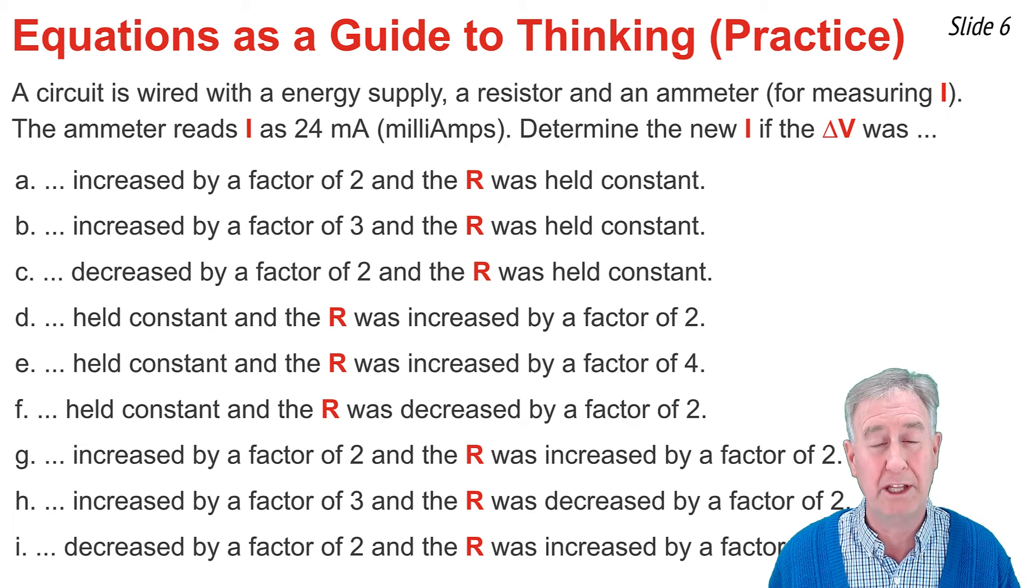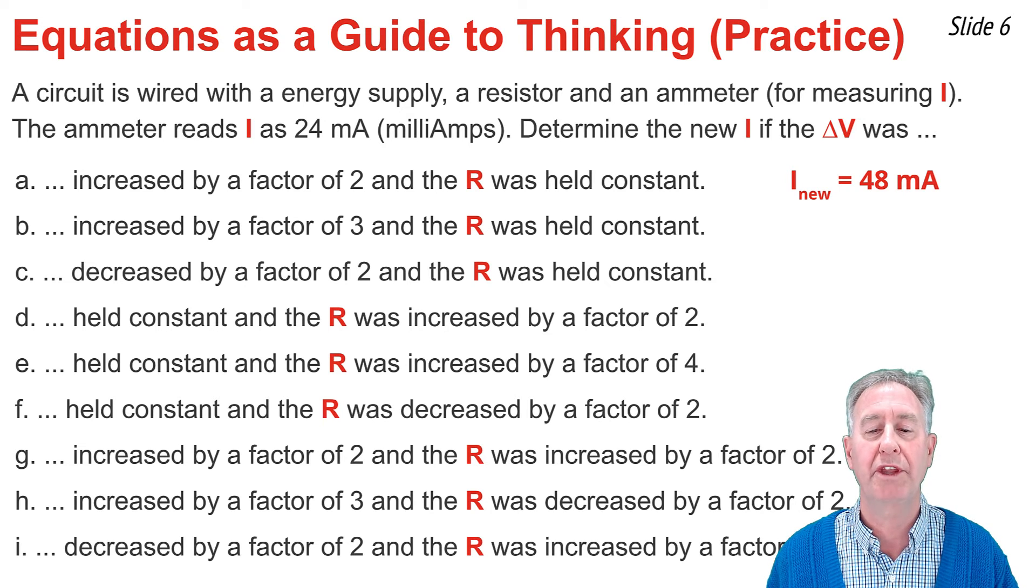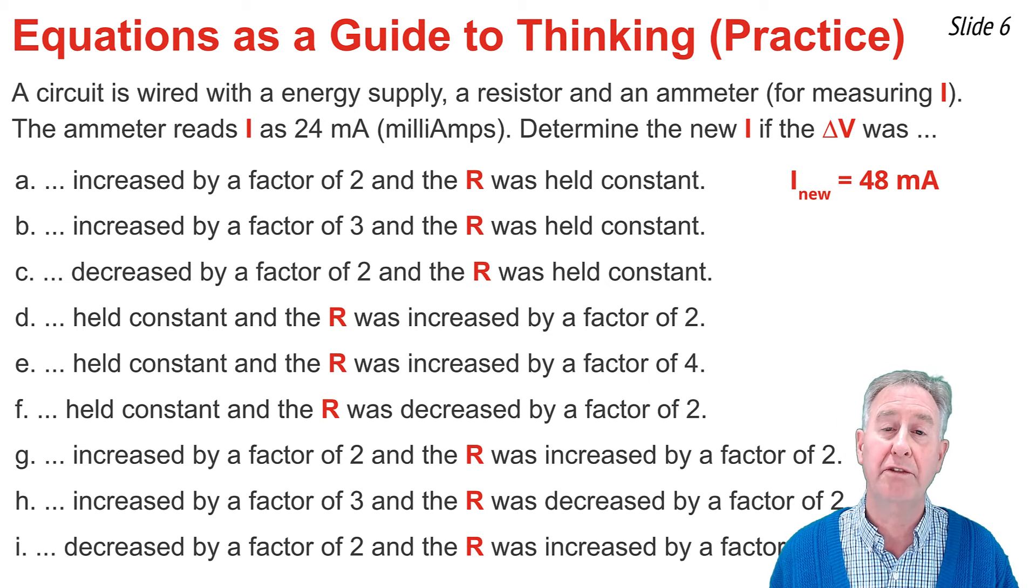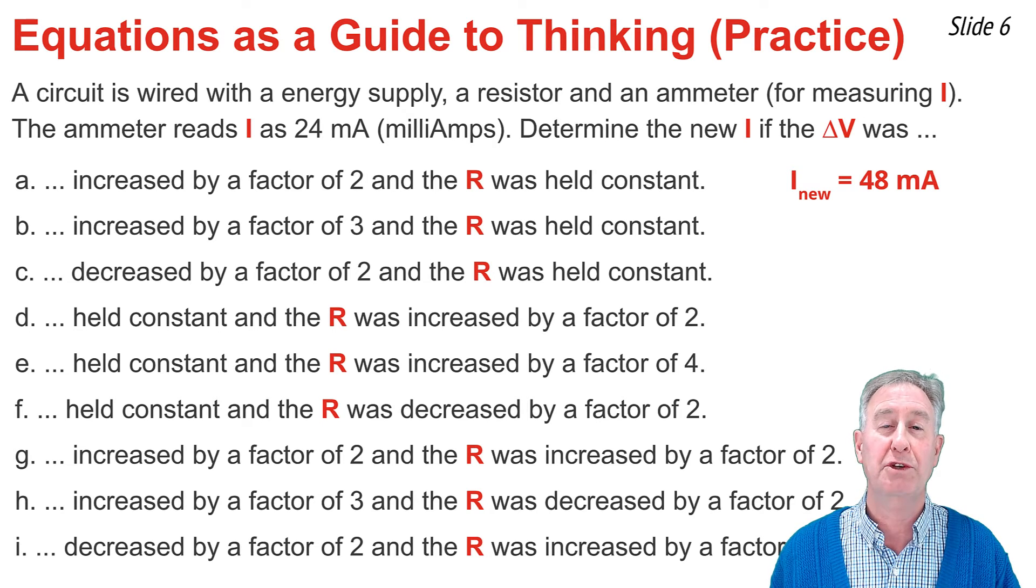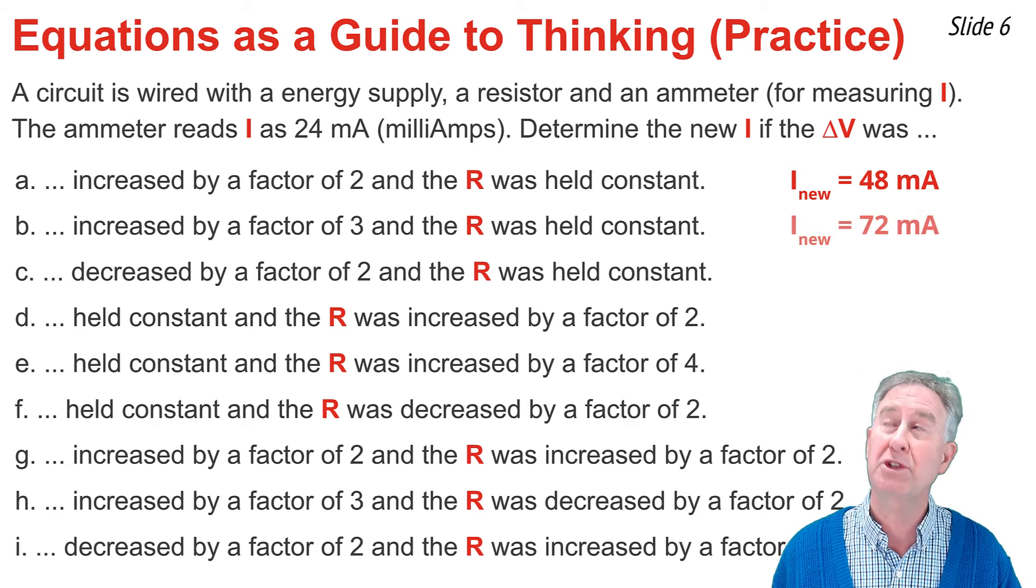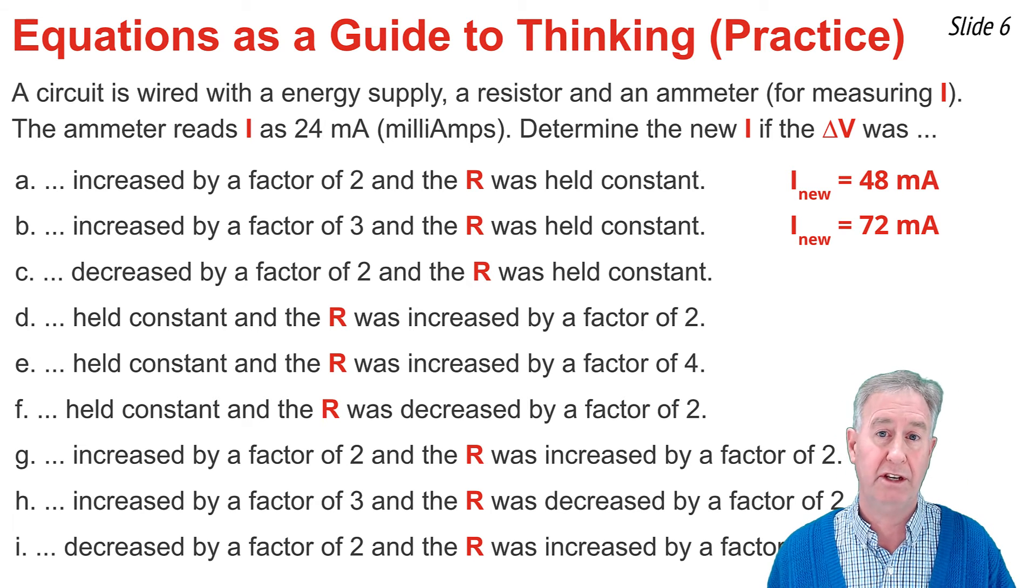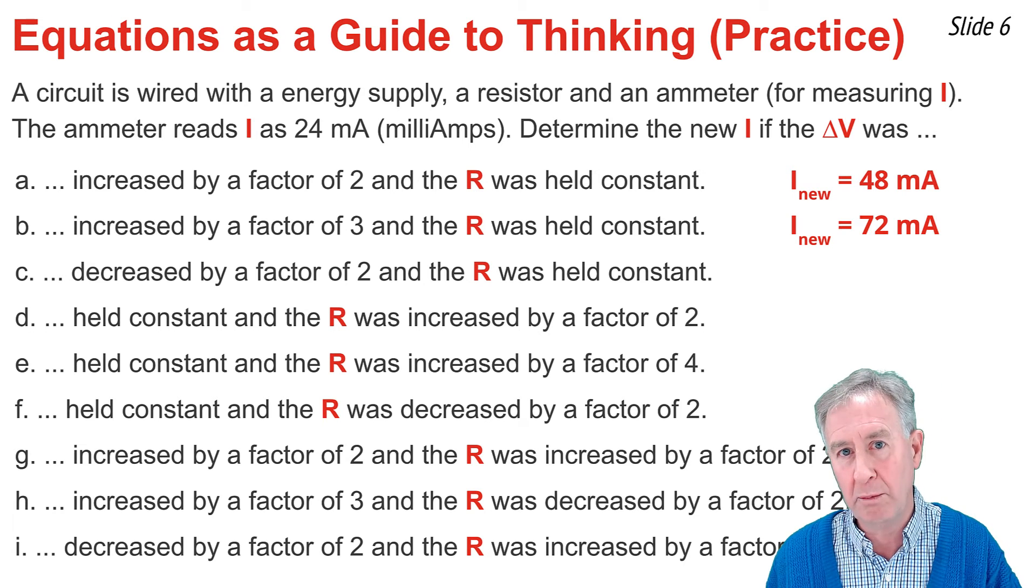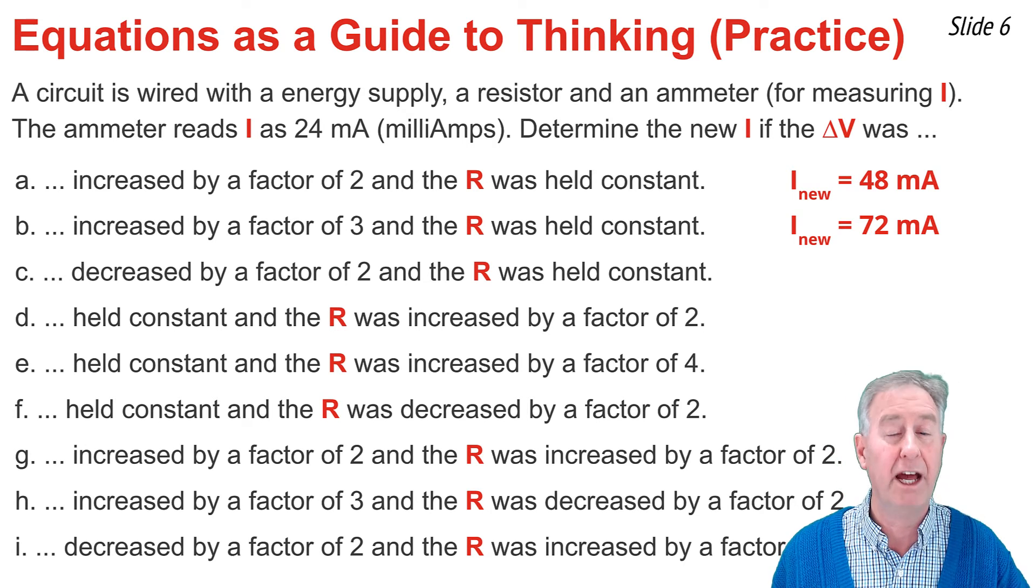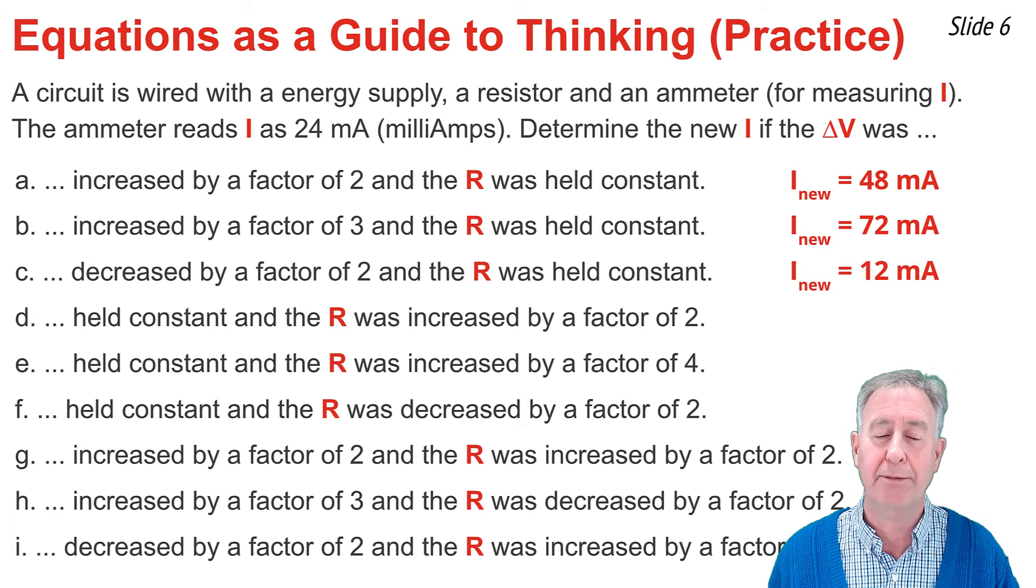In part A, we're told that delta V is increased by a factor of two with no change in R. So doubling delta V would double I. It was 24 milliamps, so now it must be 48 milliamps. In the second example, delta V is increased by a factor of three. Tripling delta V should triple the I value, so 24 milliamps becomes 72 milliamps. And in the third example, we're decreasing delta V. If you decrease delta V by a factor of two, the 24 milliamps would be half as much, 12 milliamps.